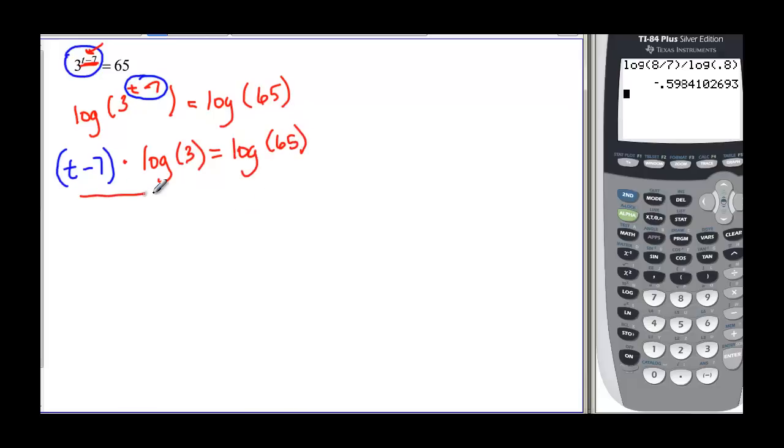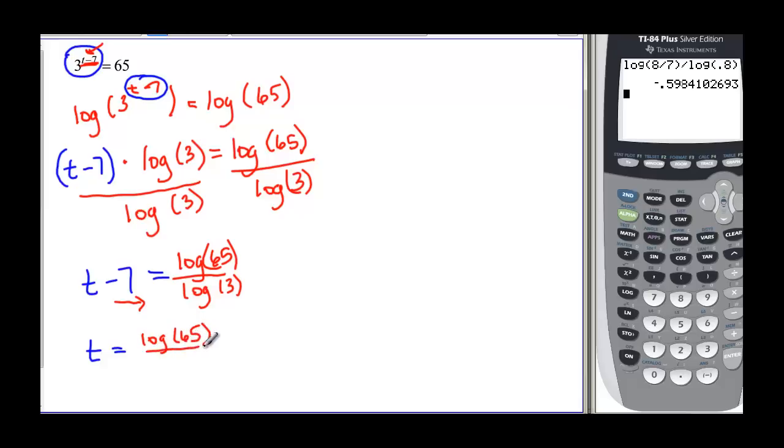So I'm going to write t minus 7, and I really can drop the parentheses now because it's the only thing left on that side, is equal to the log of 65 divided by the log of 3. And the only thing I have to do is get this 7 to the other side, so t is equal to the log of 65 divided by the log of 3. And remember, that is a number, so I have this number that I want to add 7 to. I have to add 7 to both sides, and this would be my final answer.